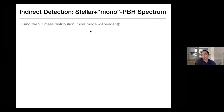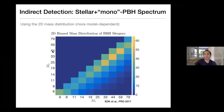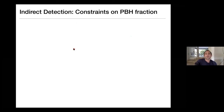You could use the 2D mass distribution — putting the primary mass and the secondary mass in a 2D plot. If you have an excess around 30 solar masses, you would see it even more strongly because the background is lower at the point corresponding to around 30 and 30 solar masses for both objects.